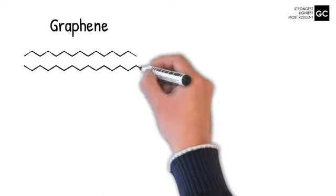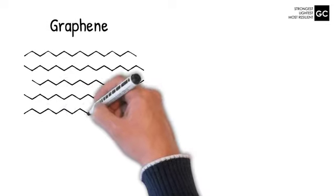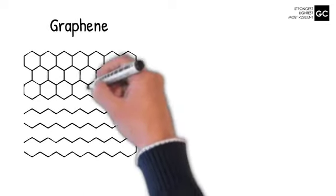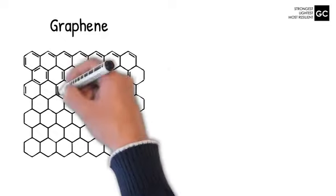Graphene is a form of carbon consisting of planar sheets which are one atom thick, which is what designates it as a 2D material. The atoms, as you can see, are arranged in a honeycomb shaped lattice.